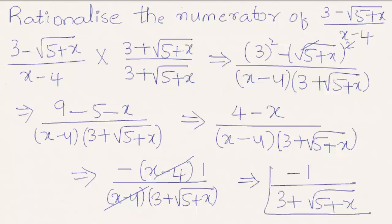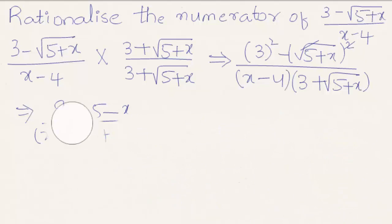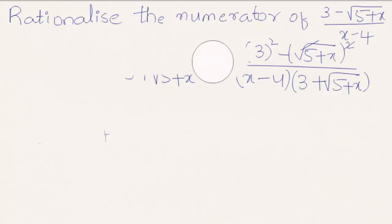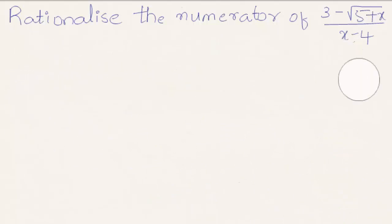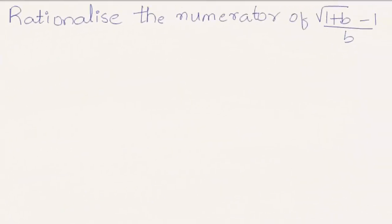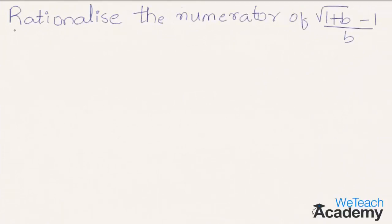So therefore this is the result when we rationalize the numerator of 3 minus under root 5 plus x, divided by x minus 4. Now let us proceed and solve one more problem using this concept.